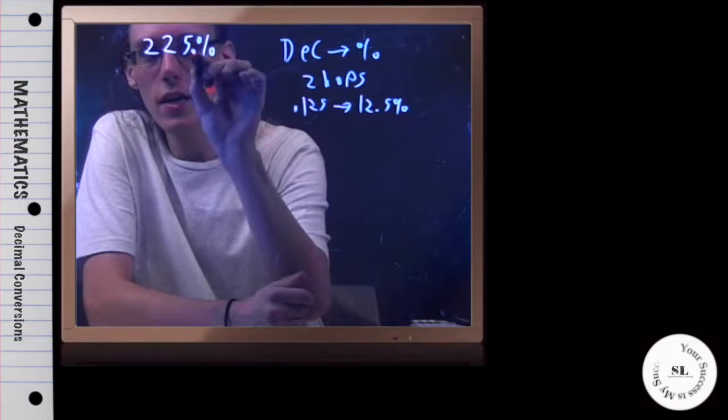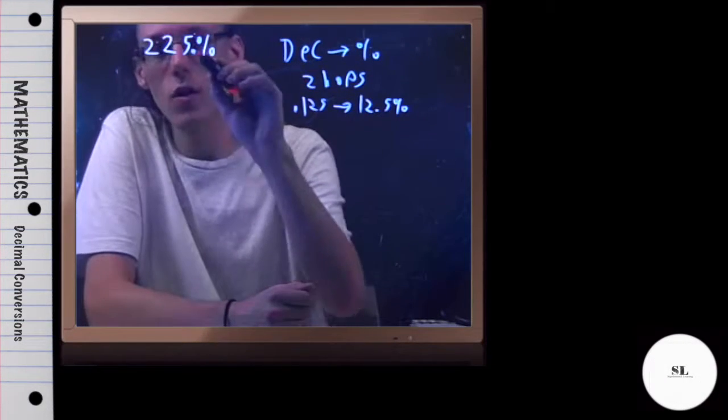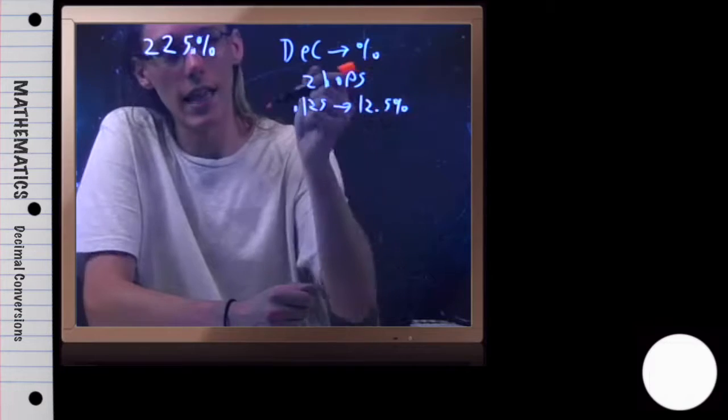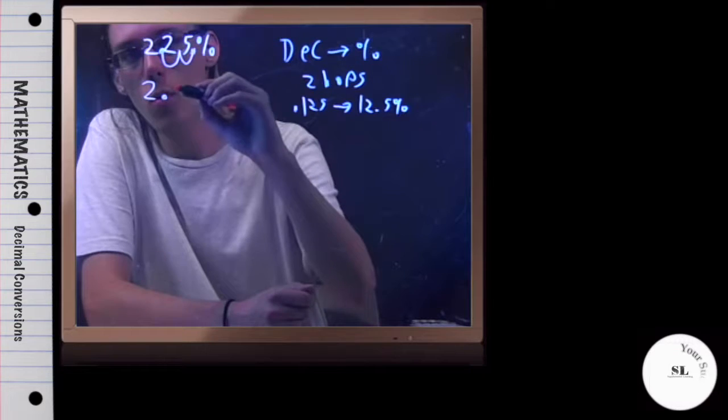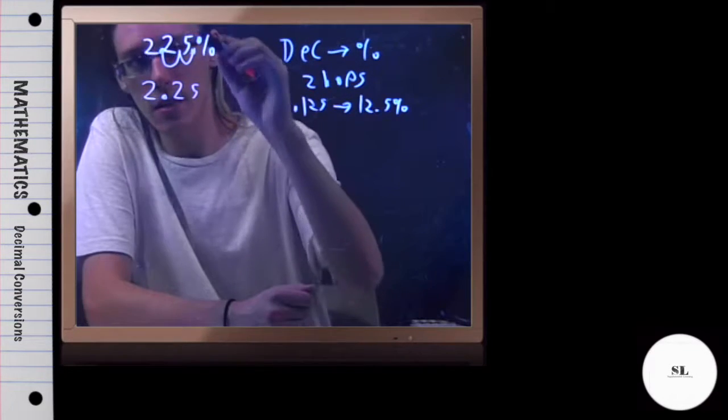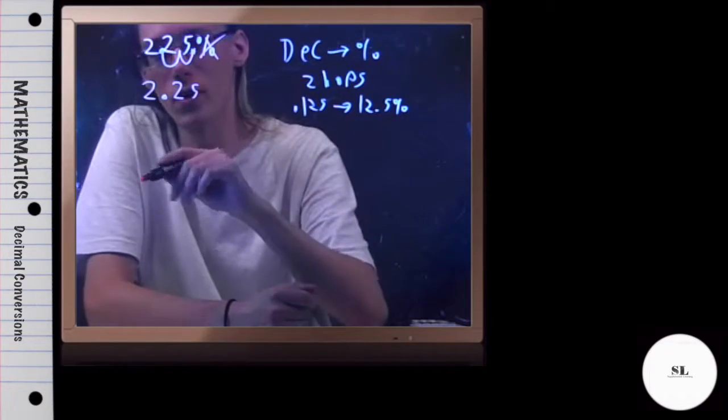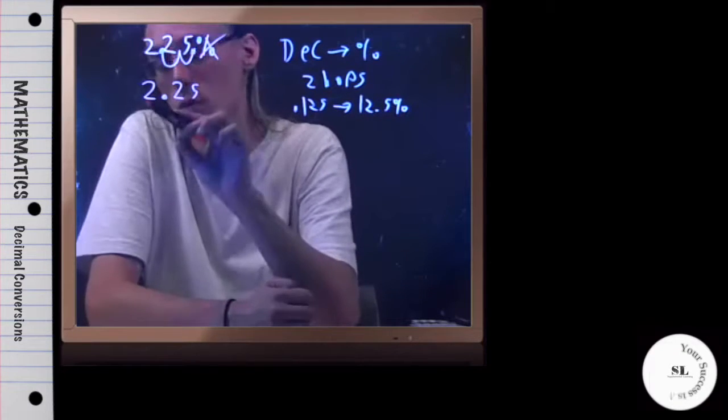If the decimal is here, and I'm going from percent to decimal, I'm going to hop to the left, the opposite direction because we're going backwards. If I do that, I wind up with 2.25, and that's not percent. I don't write that sign anymore because we've changed it from a percentage to a decimal.